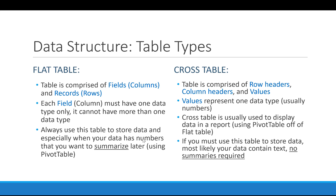The cross table, on the other hand, is comprised of row headers, column headers, and values. To read a cross table you need a column header and a row header — crossing those two will bring you to a certain value. Values in the cross table represent one data type only. In a flat table, different columns can each have their own data type, but in a cross table all values should typically be numbers.